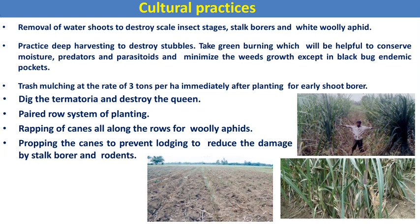Practice deep harvesting to destroy the stubbles. Green manuring helps conserve moisture and predators and parasites, and minimizes weed growth except in black bug endemic pockets. Mulching at the rate of 3 tons per hectare immediately after planting helps control early shoot borer. Dig out termitaria and destroy the queen — this technique is mostly followed to reduce termite infestation. The pair row system of planting also helps reduce sucking pest populations. Wrapping of canes is used against woolly aphids, and propping the canes prevents lodging and reduces damage by stalk borers and rodents.